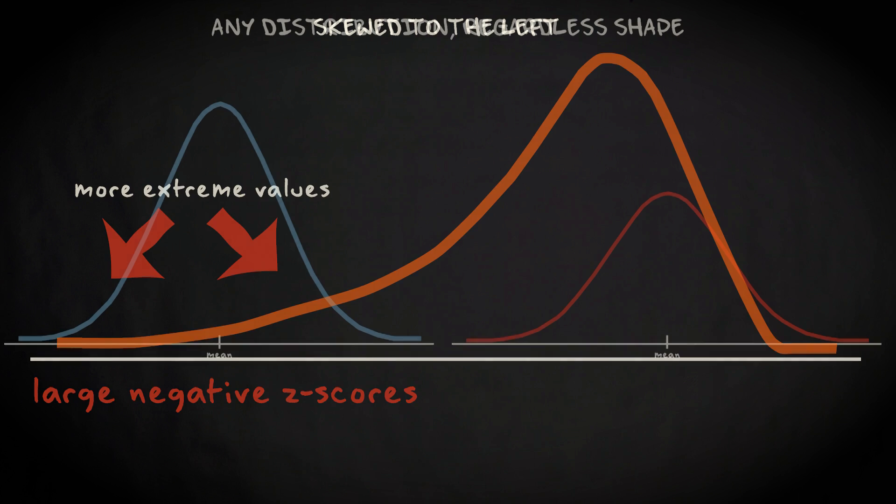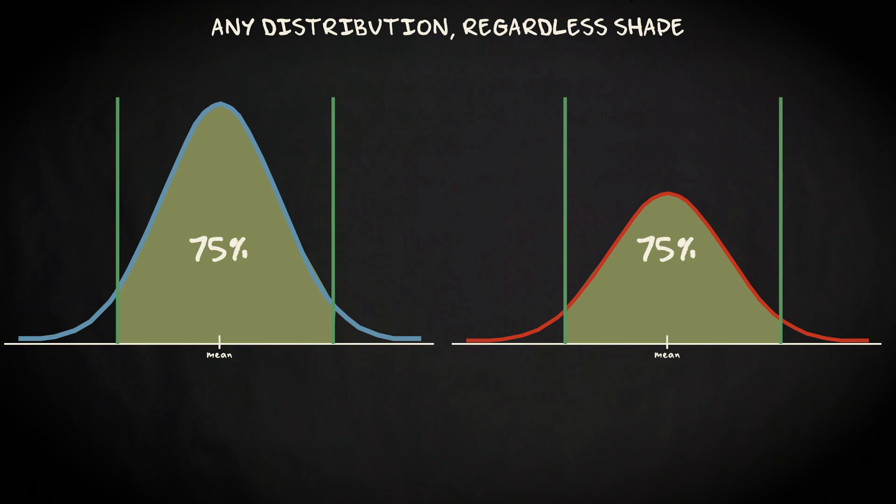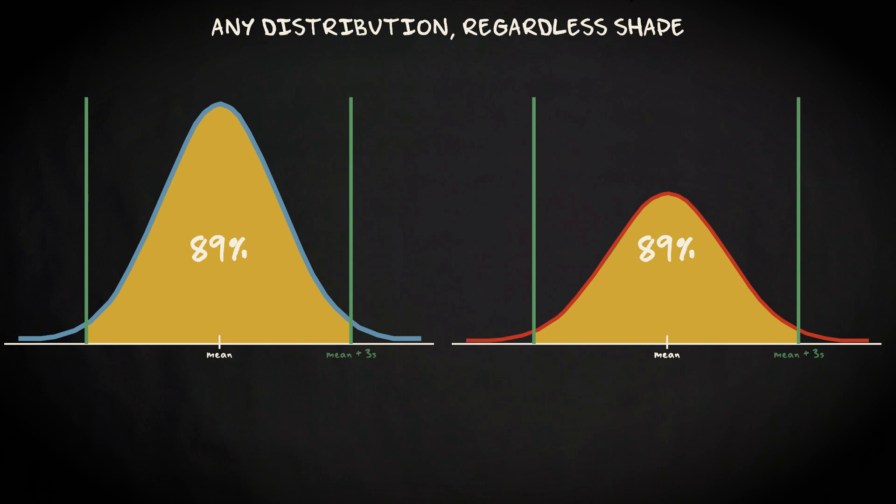A rule that applies to any distribution, regardless of shape, is that 75% of the data must lie within a z-score of plus or minus 2, and 89% within a z-score of plus or minus 3.